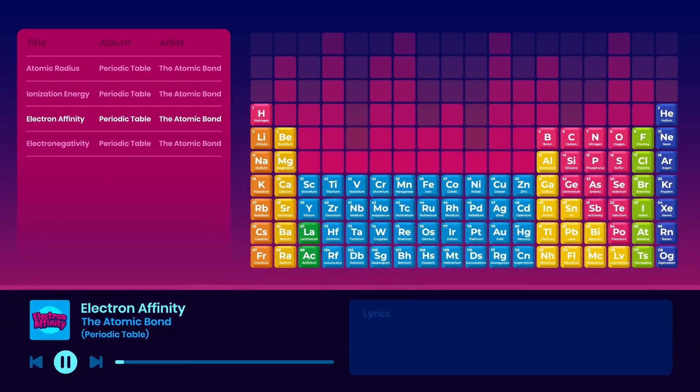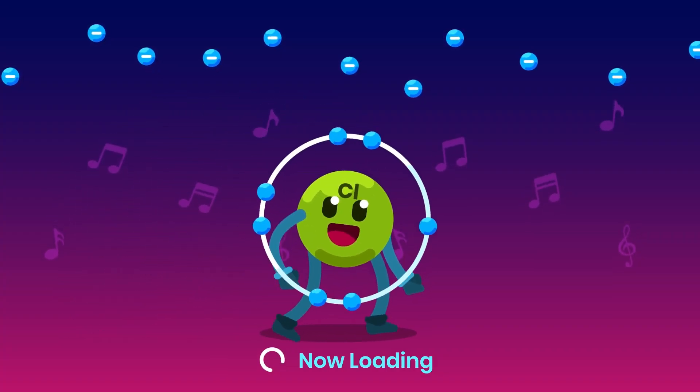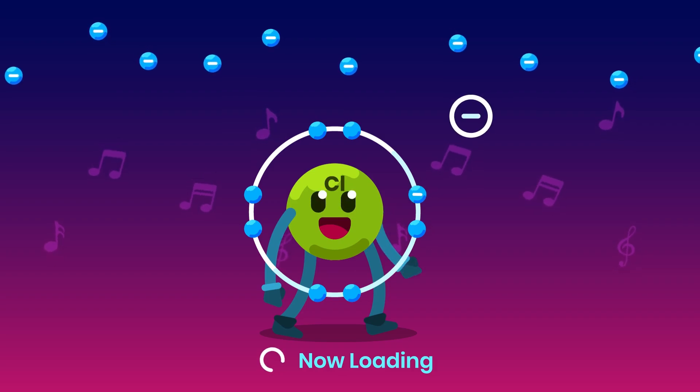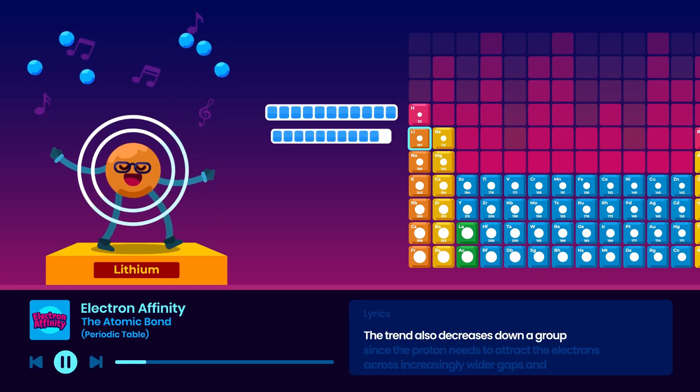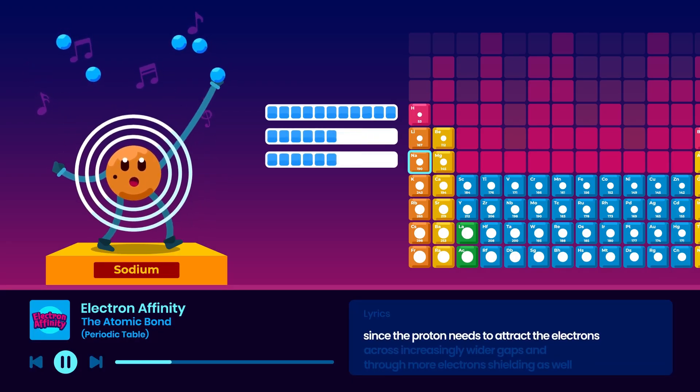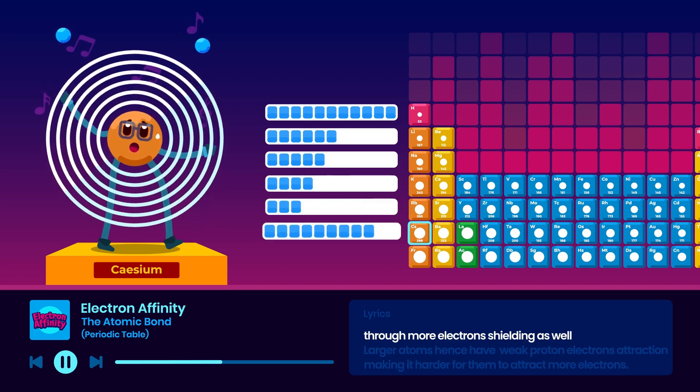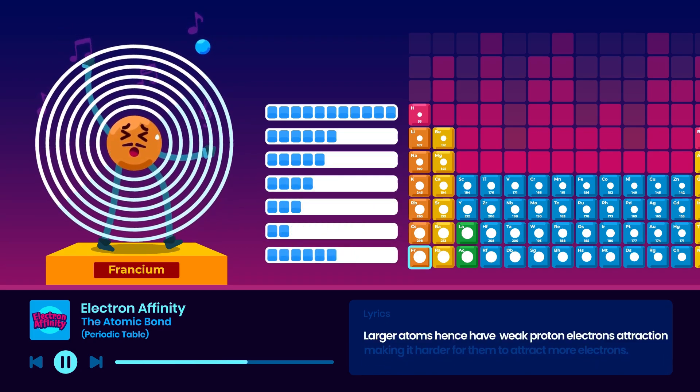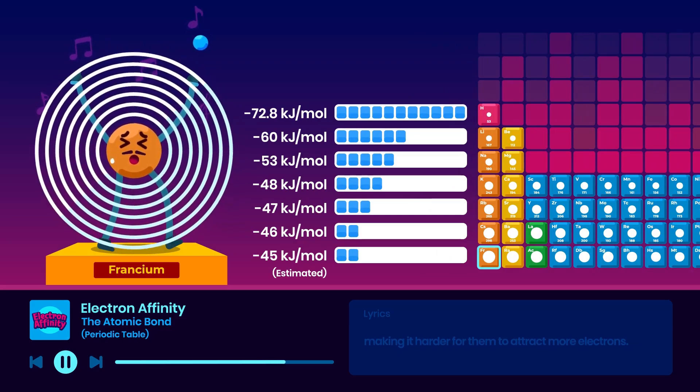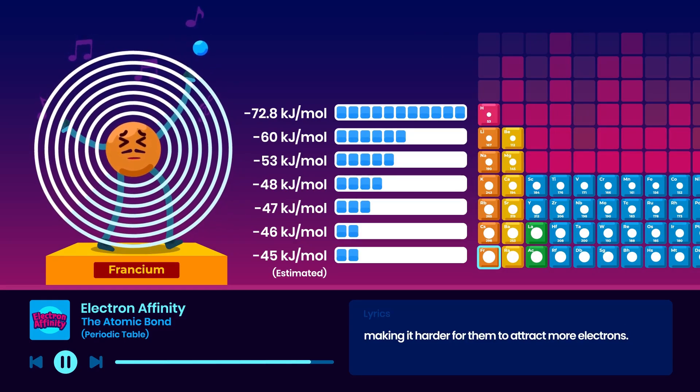Another crucial trend is electron affinity, which measures an atom's ability to attract electrons towards itself. The trend also decreases down a group since the protons need to attract the electrons across increasingly wider gaps and through more electron shielding as well. Larger atoms hence have weaker proton-electron attraction, making it harder for them to attract more electrons.